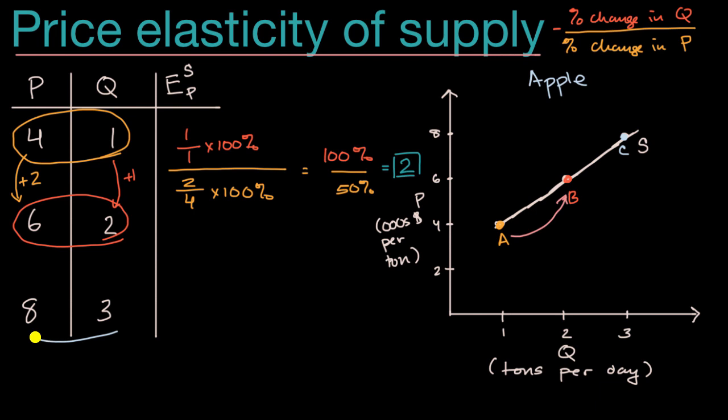Now what if we go from point B to point C? So this is point C right over here. I encourage you pause this video and see if you can calculate the price elasticity of supply when going from point B to point C.